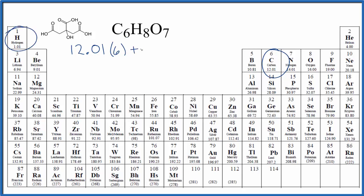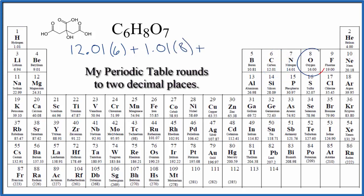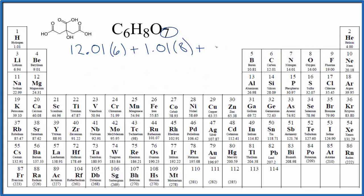Hydrogen, right here, 1.01 grams per mole. We have eight of those. Then oxygen is 16.00 grams per mole. And we have seven oxygen atoms.